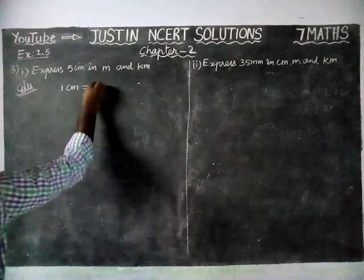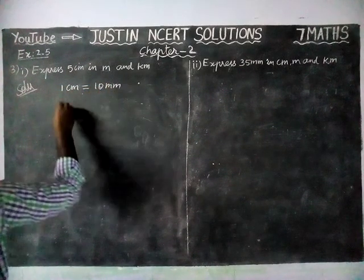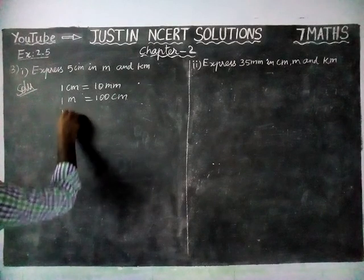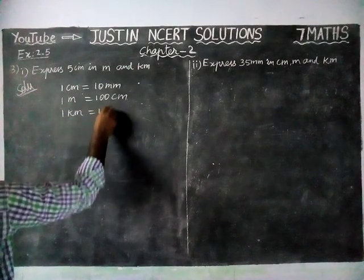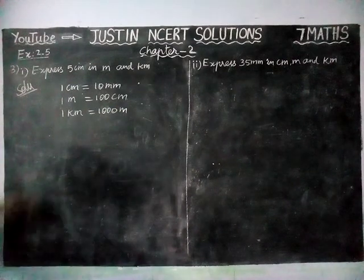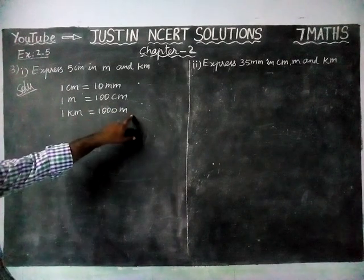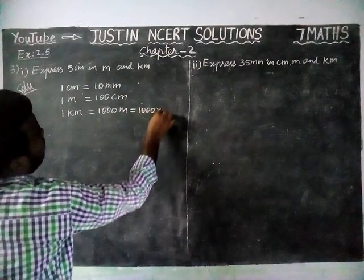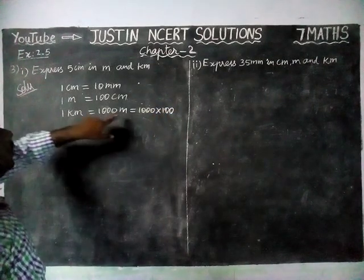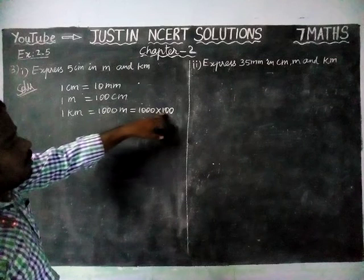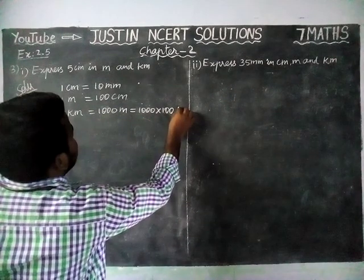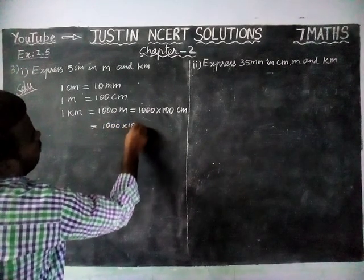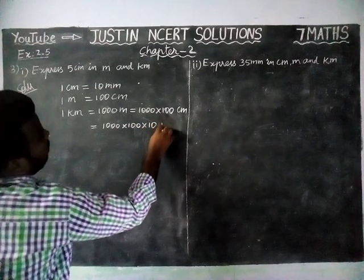One centimeter is equal to 10 millimeter, and one meter is equal to 100 centimeter, and one kilometer is equal to 1000 meter. This one kilometer can be converted into centimeter also — multiply by 1000 into 100. If you want to convert into millimeter, multiply 1000 by 100, then multiply by 10.